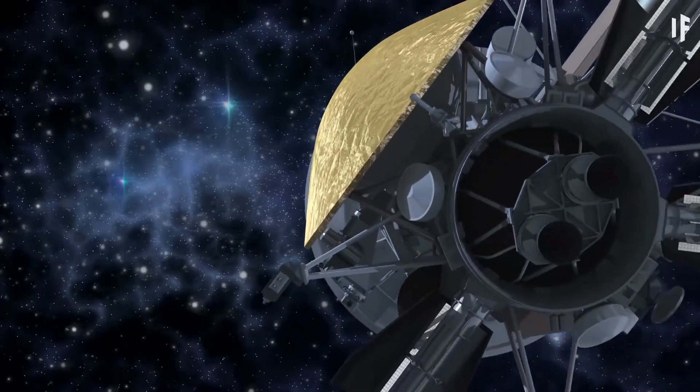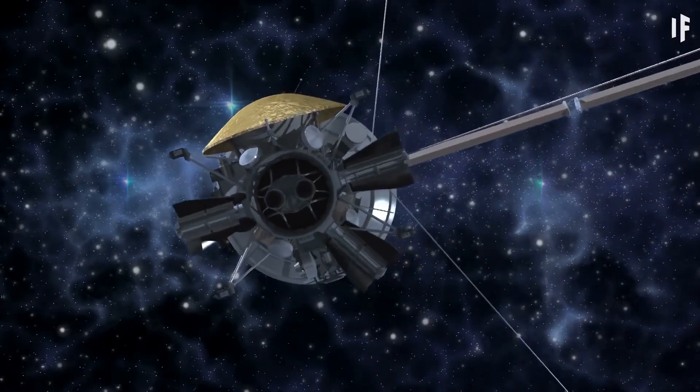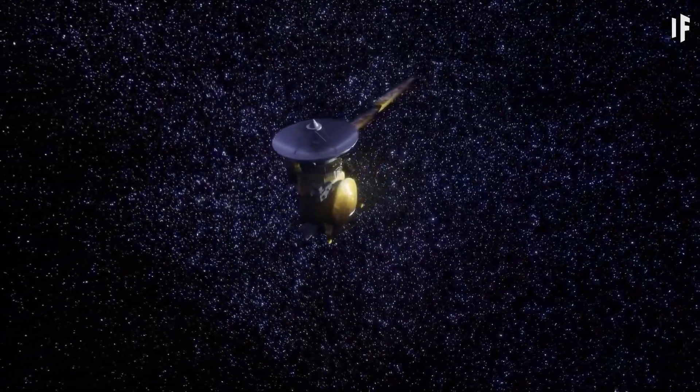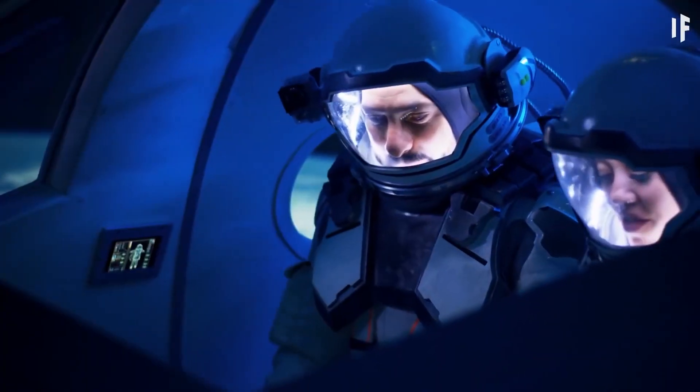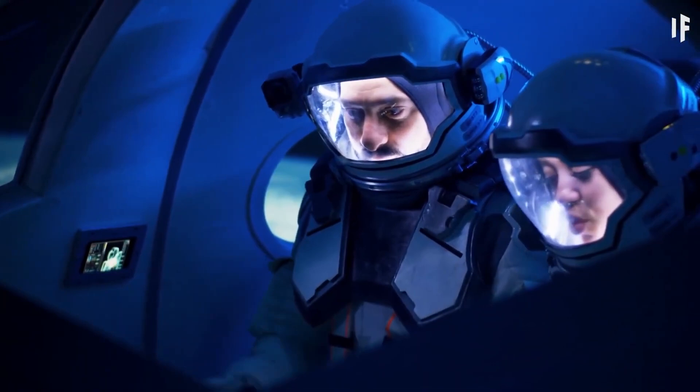Following the encounter with Saturn, Voyager 1 headed on a trajectory to escape the solar system at a speed of about 500 million kilometers per year. So long, Voyager 1. Thank you for all.